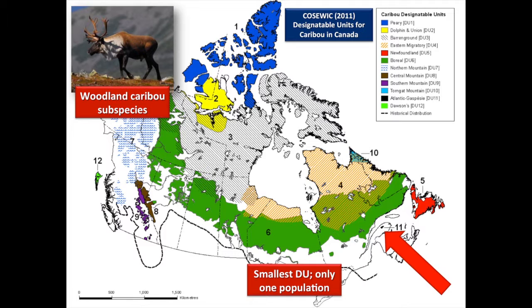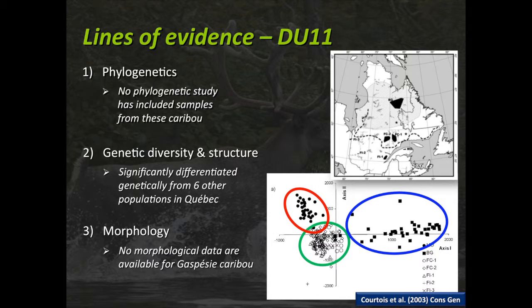In the case of designable units, it's the smallest DU, representing only one population. So it's quite easy to synthesize this afternoon. There's a bunch of new information that is interesting to figure out what challenges this population is facing. Reviewing the different lines of evidence, there are different facets of the Gaspésie caribou ecology we know quite well, and many things we don't know yet.